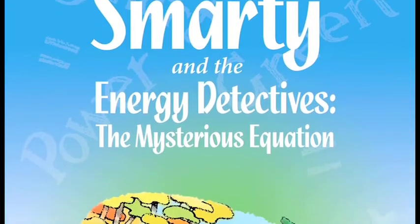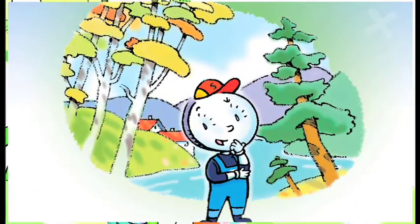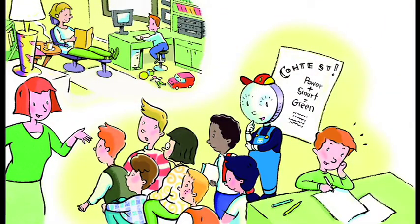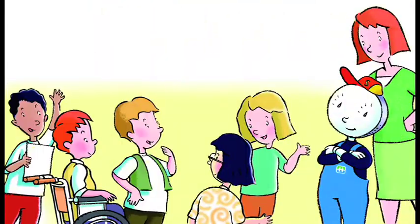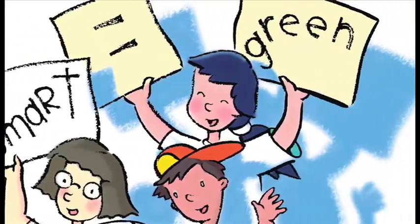The student reader Smarty and the Energy Detectives The Mysterious Equation is a story of a classroom in a school trying to create a green plan. They are led through the process by Smarty and end up discovering the meaning of the mysterious equation: power plus smart equals green.